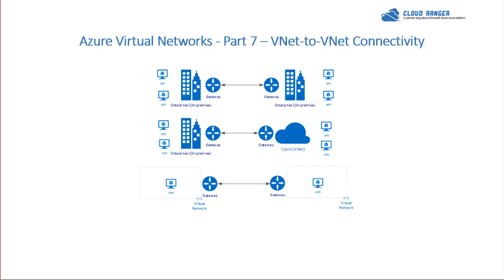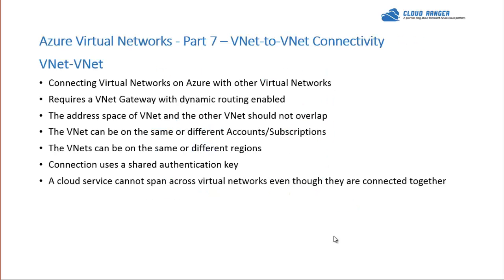In VNet-to-VNet connectivity, we connect two virtual networks in Azure by creating respective gateways and making a site-to-site connection between them. Like in our previous point-to-site session, the only way to create any kind of tunnel is by provisioning a gateway on your virtual network. For VNet-to-VNet connectivity, we need dynamic routing enabled on that gateway.